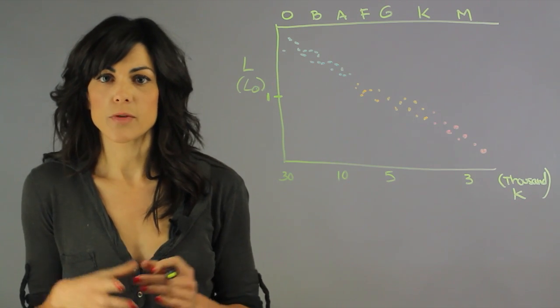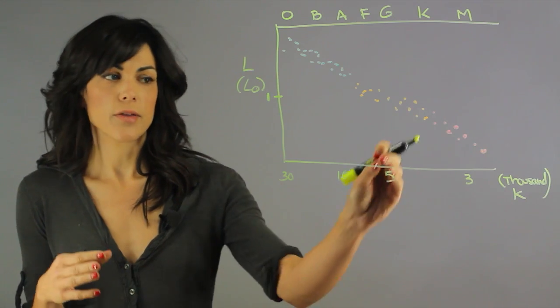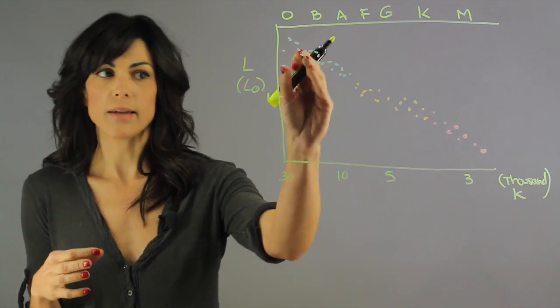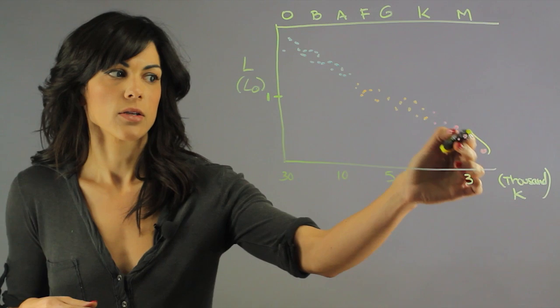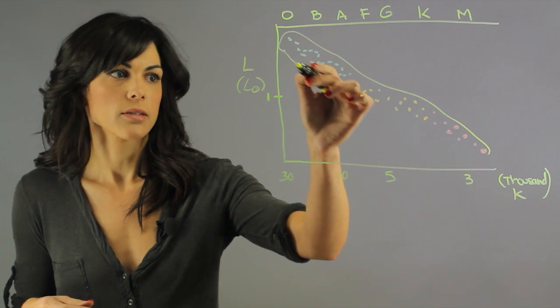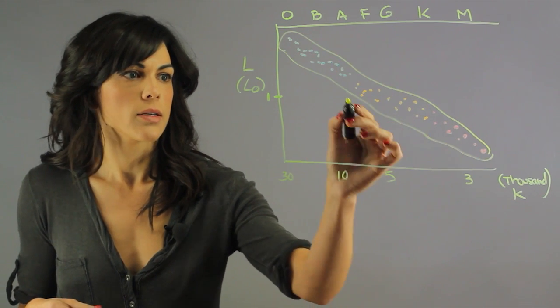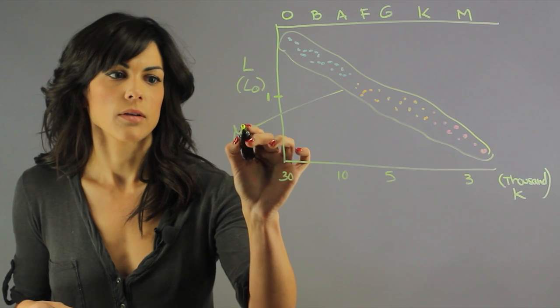A star spends most of its life in a very thin band that is called the main sequence. So this band is called the main sequence and we call that MS.